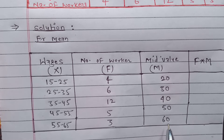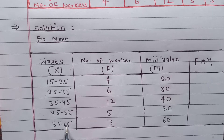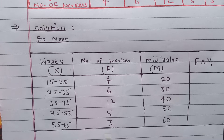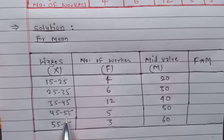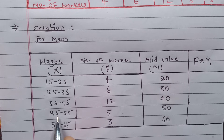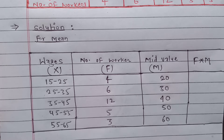If you are confused about how to calculate the mid value: for 55 to 65, add 55 plus 65 and divide by 2 to get 60. For 45 to 55: 45 plus 55 divided by 2 is 50. You can calculate all mid values this way.